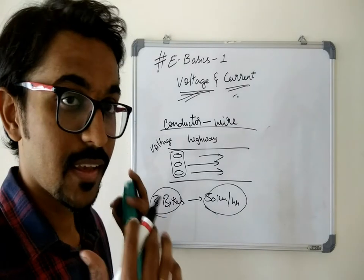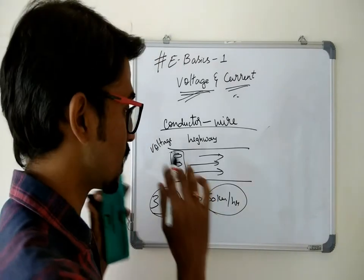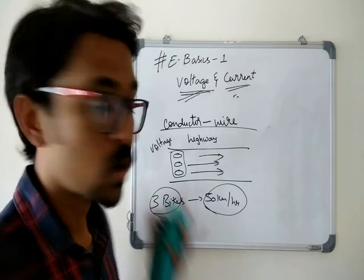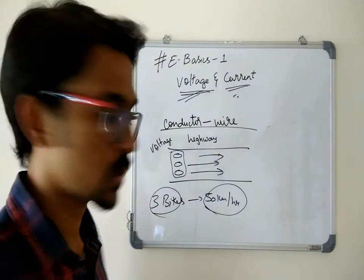Then this can be said as voltage and this can be said as current. So this voltage and current are not in a realistic way. I'm just explaining the motion of electrons in the conductor on basis of a highway example. So this is what we can say as the current and the voltage.